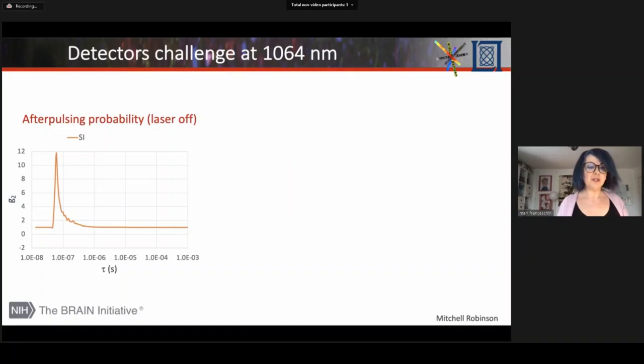For regular continuous wave DCS, we use silicon photodiodes. And the afterpulsing probability of this diode happens at times that are not physiologically important for DCS because the blood flow decay starts around 10 to the minus 6 seconds. But the problem with silicon is that they have very poor photon efficiency in the near-infrared, especially at 1064 nanometers. And if I try to make them more efficient in photon efficiency, I lose temporal resolution. So they're really not usable in time domain DCS.